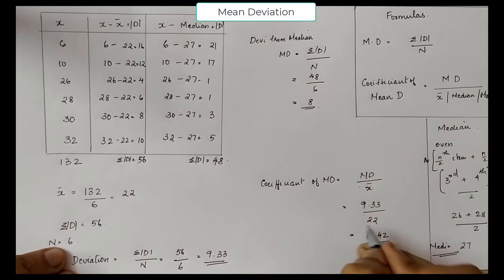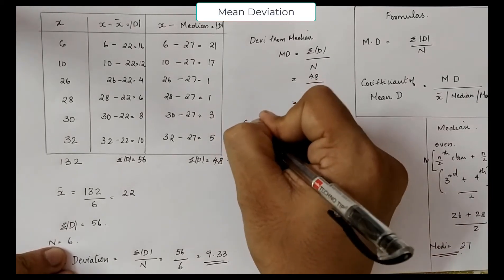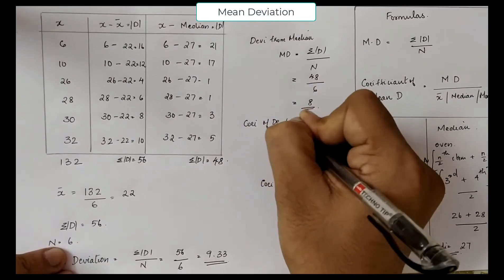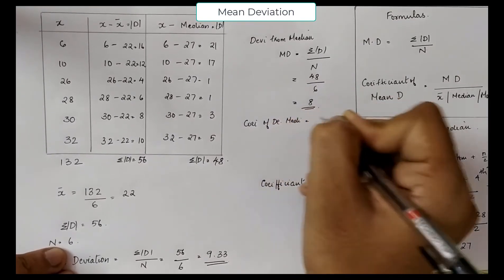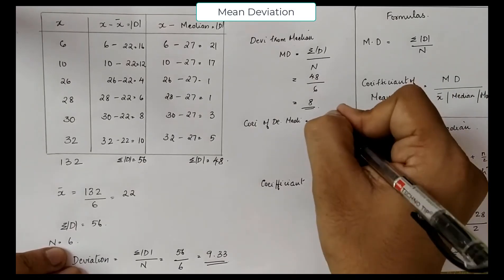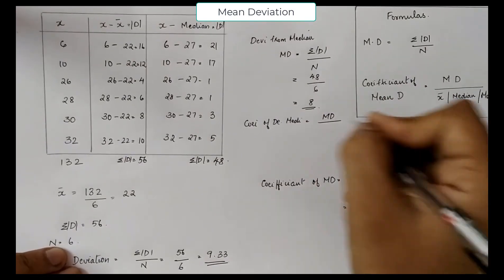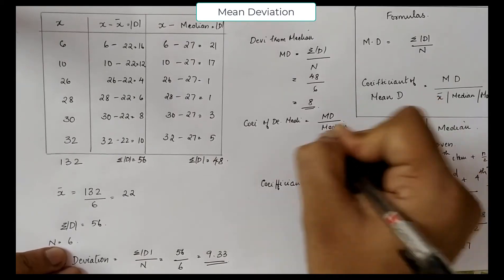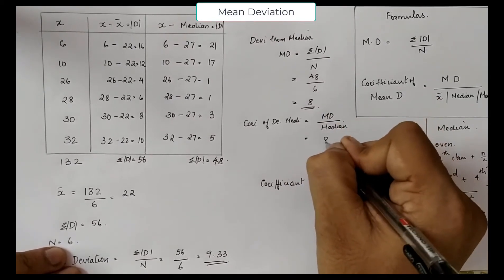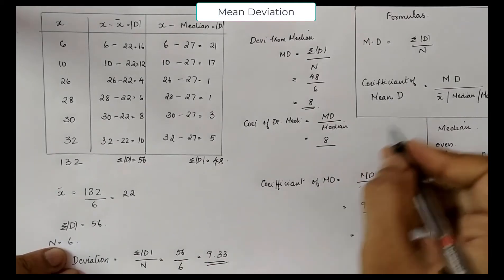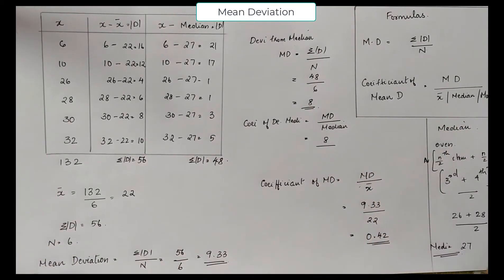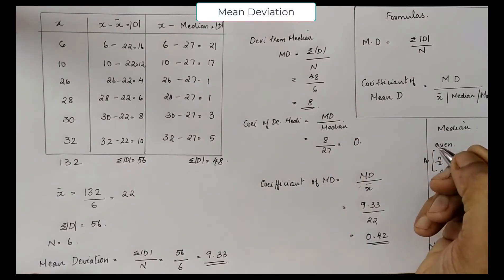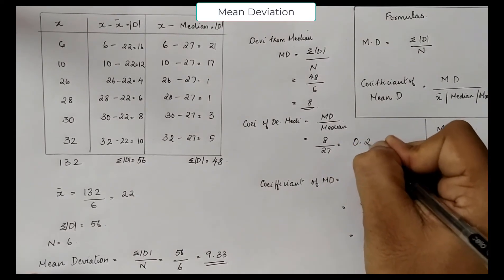Now again we are supposed to find the coefficient of mean deviation from median. The coefficient of mean deviation from median is equal to MD divided by median. MD is 8 and the median is 27, so 8 divided by 27 equals 0.29.